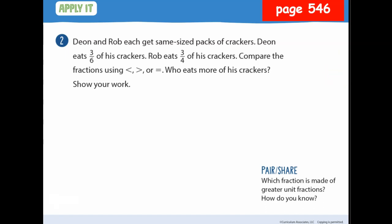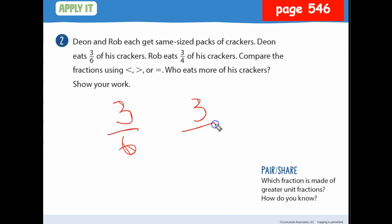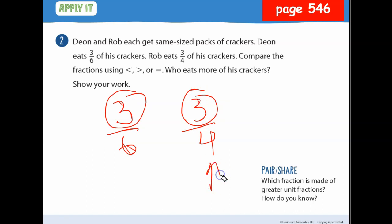On page 546: Dion and Rob get the same size pack of crackers. Dion eats 3/6 of his crackers and Rob eats 3/4 of his crackers. Compare 3/6 and 3/4. Again, the numerators are the same, so the smaller denominator is the bigger fraction. So what symbol do we use? Less than.